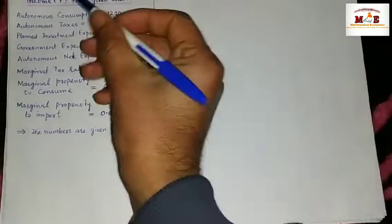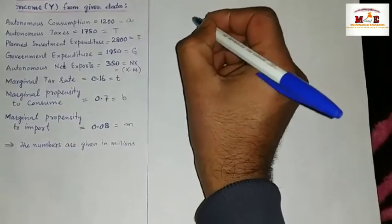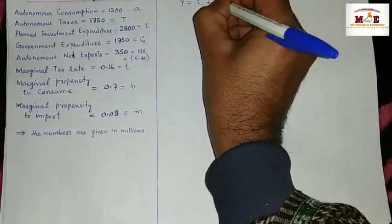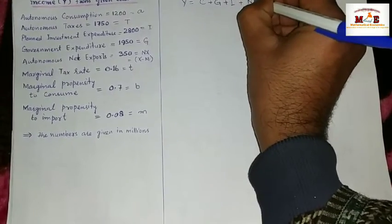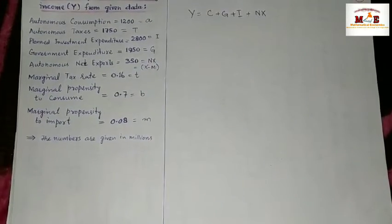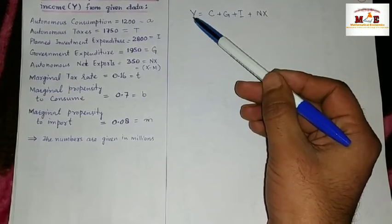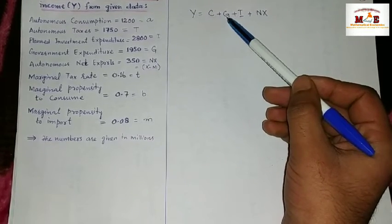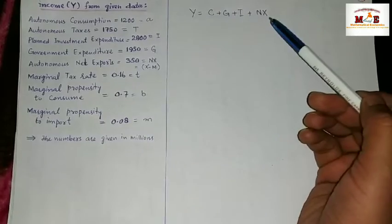To calculate the equilibrium level of national income Y, we write the national income identity: Y equals C plus G plus I plus NX. Here Y represents the equilibrium national income, C is consumption expenditure, G is government expenditure, I is planned investment expenditure, and NX represents net exports.